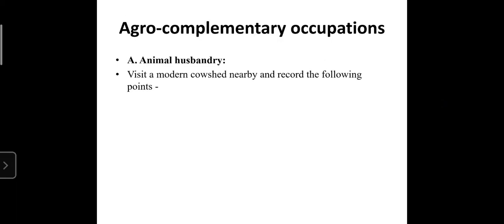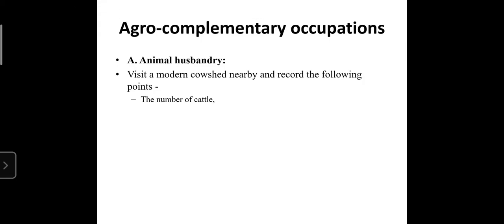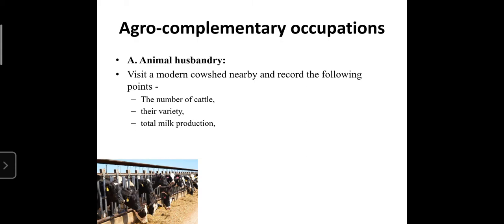The first agro complementary occupation is animal husbandry. If you visit a modern cow shed nearby your house, record the following points: first, the number of cattle — how many cattle are there in that cow shed; second, their variety — which variety they are; and third, the total milk production — how much milk is produced in that cow shed.